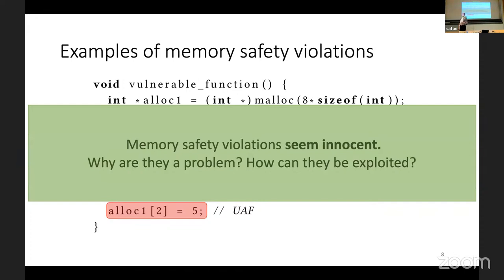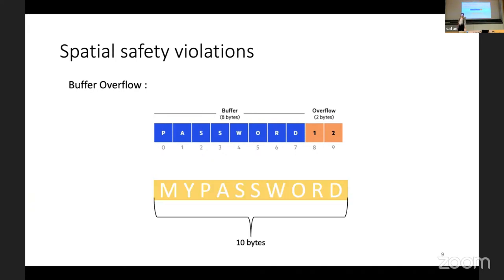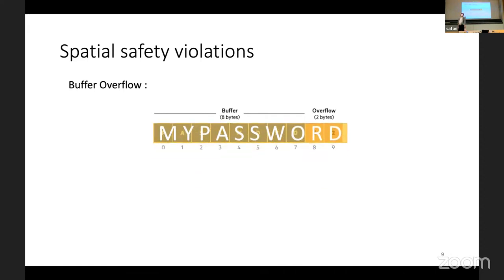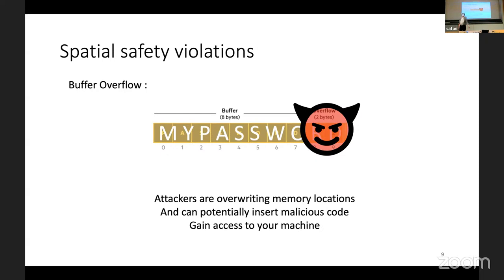Memory safety violations seem very innocent and are easy to induce with such code — you might have even done so accidentally on your own machine. Now we ask why they are actually a problem. Looking at buffer overflows: here we see a buffer of eight bytes and some adjacent memory to it. If I had a password of 10 bytes, the two excess bytes would overwrite the adjacent memory. An attacker could use this to overwrite those memory locations with their own code and potentially insert malicious code, giving them access to your machine.